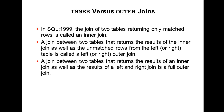In SQL 1999, a join of two tables that returns only matched rows is called an inner join. A join between two tables that returns the inner join results as well as unmatched rows from the left table is called a left outer join. A join between two tables that returns the results of the inner join as well as results from both the left and right joins is called a full outer join.